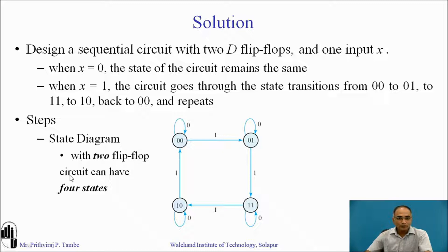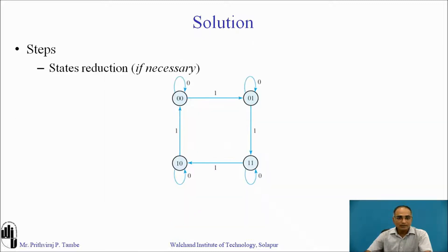With two flip-flops the circuit can have a maximum of four states, and here we have exactly these four states. The next important step is state reduction if necessary. For complex state diagrams you apply different state reduction techniques to reduce the hardware. This is a simple state diagram with only four states, and if you observe it correctly there is no possibility of state reduction, so you can proceed to the next step in the design procedure.